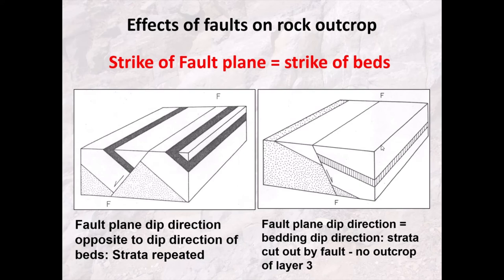If we change the orientation of our fault so that the strike of the fault plane is perpendicular to the dip direction, we can form a repetition of the stratigraphy. This part of our block diagram, before the fault happened, would join up with this black band here. By forming a dip-slip fault where the strike is perpendicular to the dip direction, we get this repeated stratigraphy.